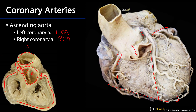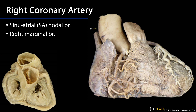Looking at another anterior view of the heart — inferior border, right border, left border, apex — we can see the RCA leaving the ascending aorta. There is the origin of the RCA, and immediately it gives off the sinoatrial node branch. In about 60 to 70 percent of instances, the sinoatrial node branch going to the sinoatrial node will come off of the RCA.